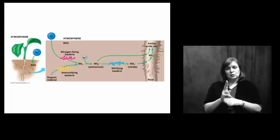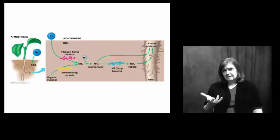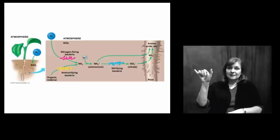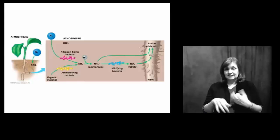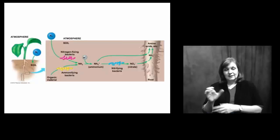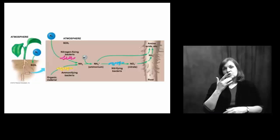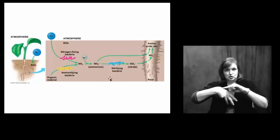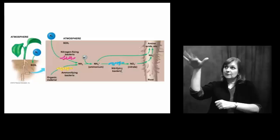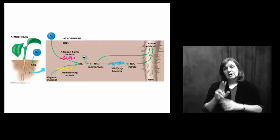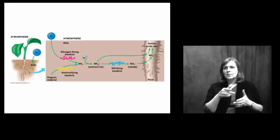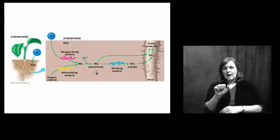Don't plants just take nitrogen out of the atmosphere along with the CO2 and oxygen they need? Well, it turns out that plants cannot directly use N2 gas from the atmosphere. They are very dependent on nitrogen-fixing bacteria to convert that nitrogen into a usable form. Plants actually prefer nitrates — NO3 — though they can also use NH4, ammonium.